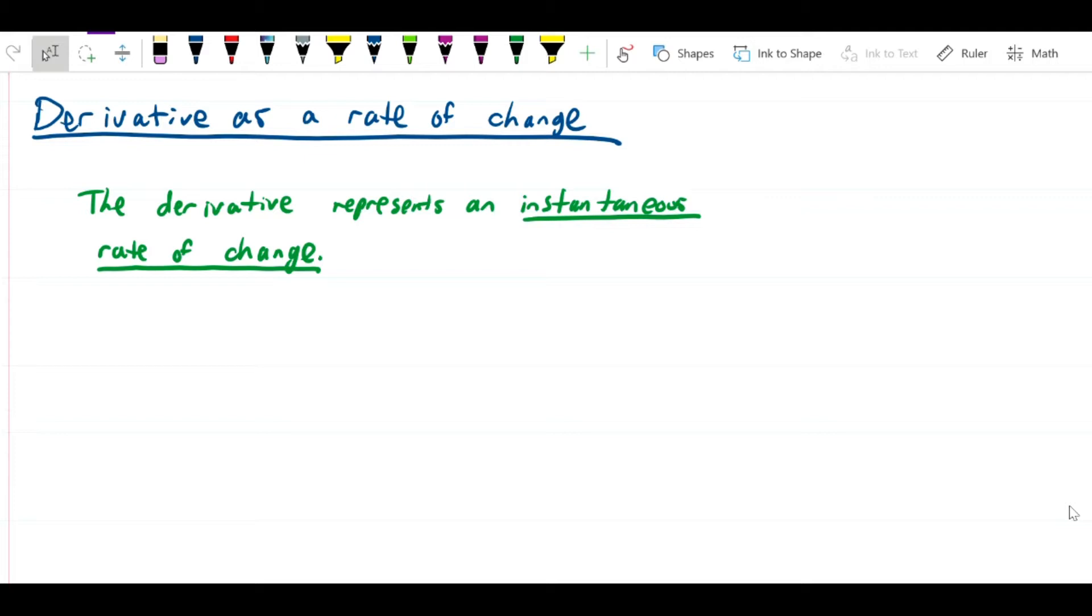What we want you to think of the derivative as is a rate of change. This is the name of section 3.4 in the Thomas textbook because it's a fairly important interpretation of a derivative.